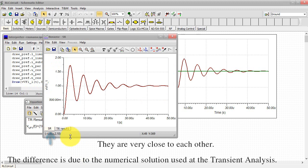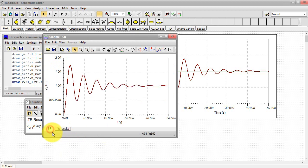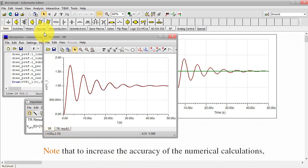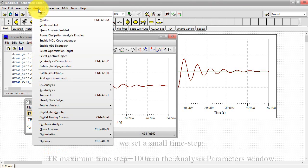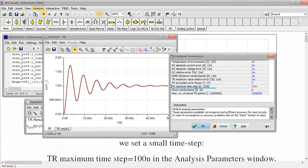The difference is due to the numerical solution used at the transient analysis. Note that to increase the accuracy of the numerical calculations, we set a small time step. TR maximum time step equals 100 ns in the Analysis Parameters window.